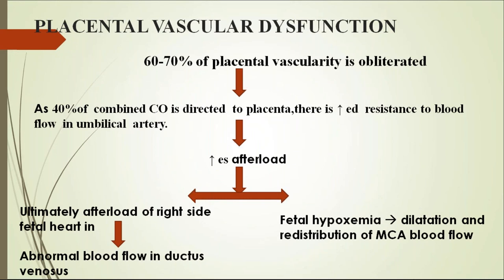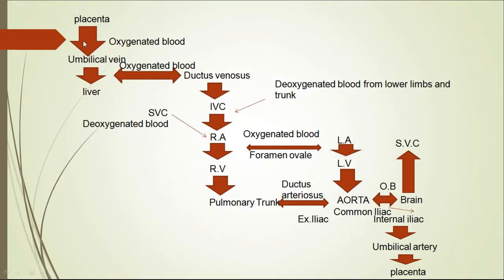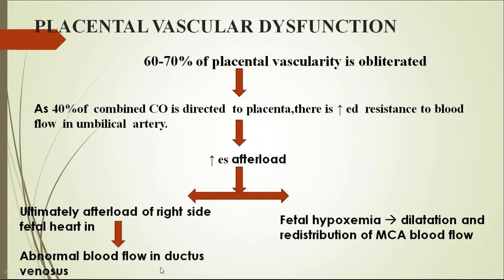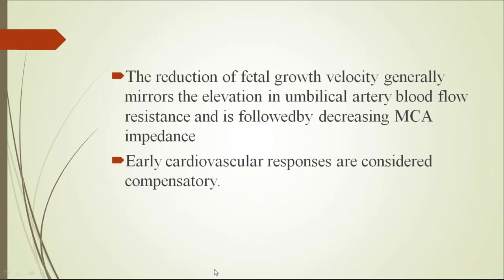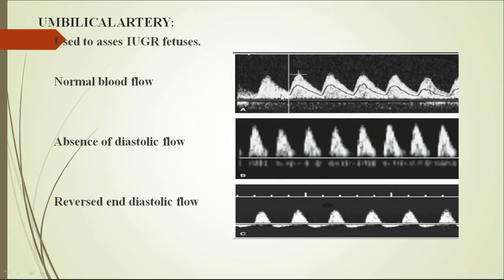When placental perfusion or placental vascularity is reduced, there is increased resistance to flow in the umbilical artery. On Doppler, you will see the systolic and diastolic flow. As resistance increases, the diastolic flow gradually diminishes — first showing absent end-diastolic flow, then reversed end-diastolic flow. This pattern in the umbilical artery follows progressive placental insufficiency.